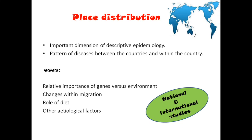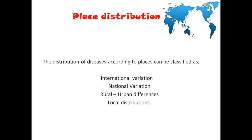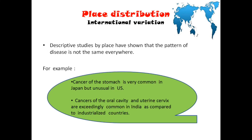For place distribution, we need to find out local distribution, urban-rural differences, national and international variations. International variations: stomach cancer is common in Japan but not in the US; oral cancers are common in India compared to Western countries. National variations: some areas have endemic diseases like fluorosis, goiter, malaria, and nutritional deficiencies, which are prevalent in certain parts of a country — for example, endemic fluorosis areas in Kerala are Alappuzha and Palakkad.